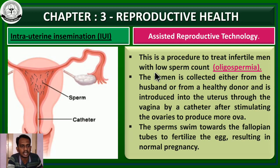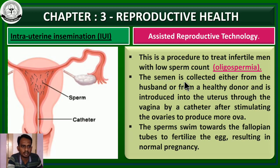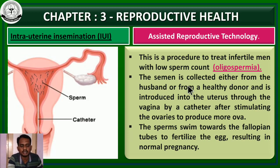Intrauterine insemination is a procedure to treat the infertile man with low sperm count, called oligospermia — a condition with low sperm count where the sperm count is very small. If a person is unable to produce a sufficient number of sperm, they are advised to go for intrauterine insemination. The semen is collected either from the husband or from a healthy donor, because the husband's sperm count may be very small.